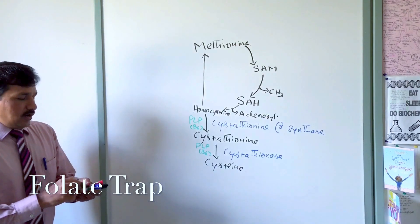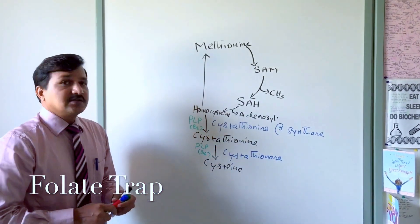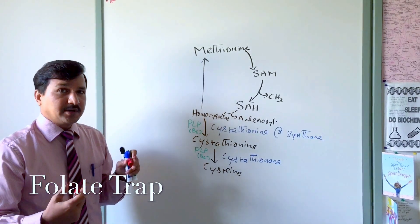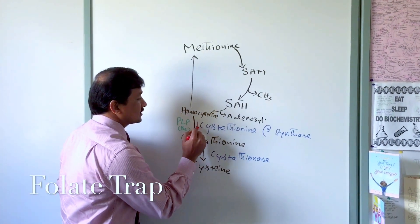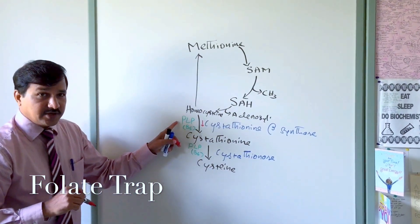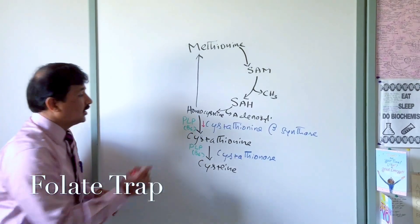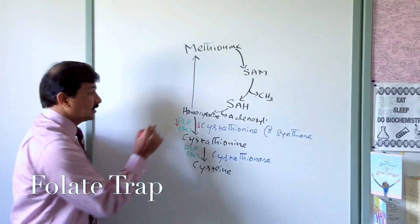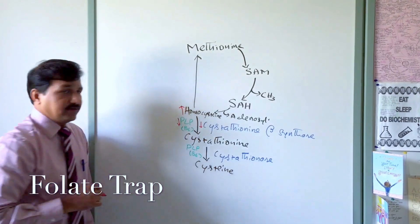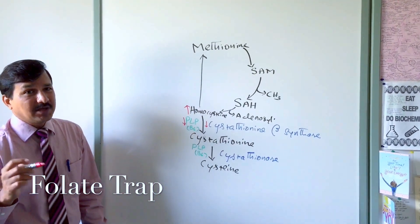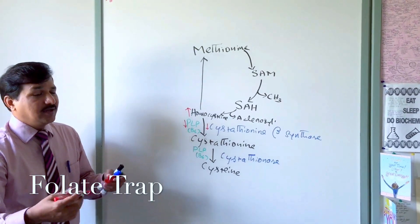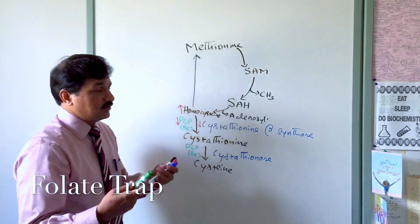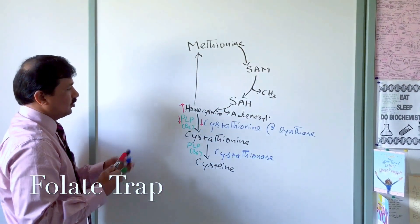If there is a mutation in the gene coding for cystathionine beta synthase, causing the enzyme to be defective, or if there is a deficiency of pyridoxal phosphate (vitamin B6), then cystathionine beta synthase activity decreases. During that time, homocysteine levels increase in the blood — this is called homocystinemia. When it appears in the urine, it is called homocystinuria.